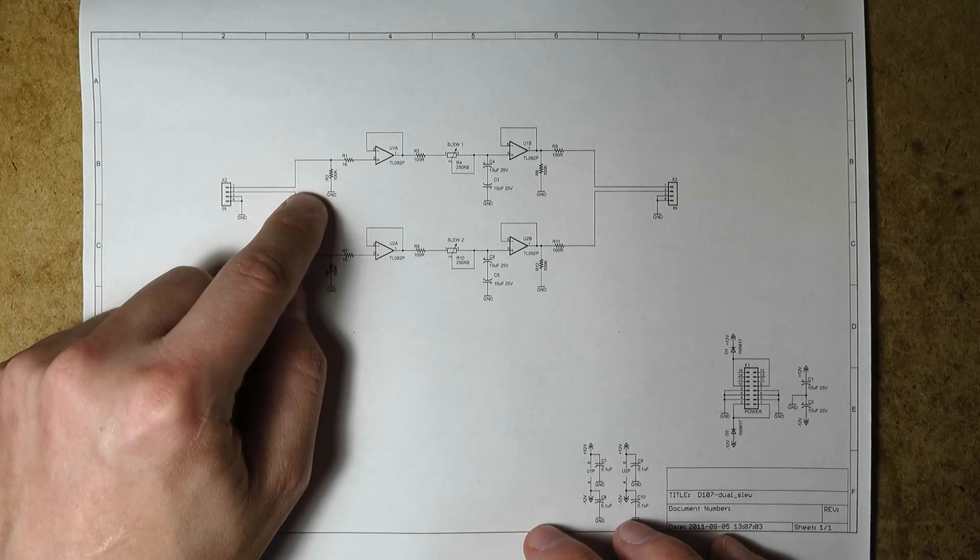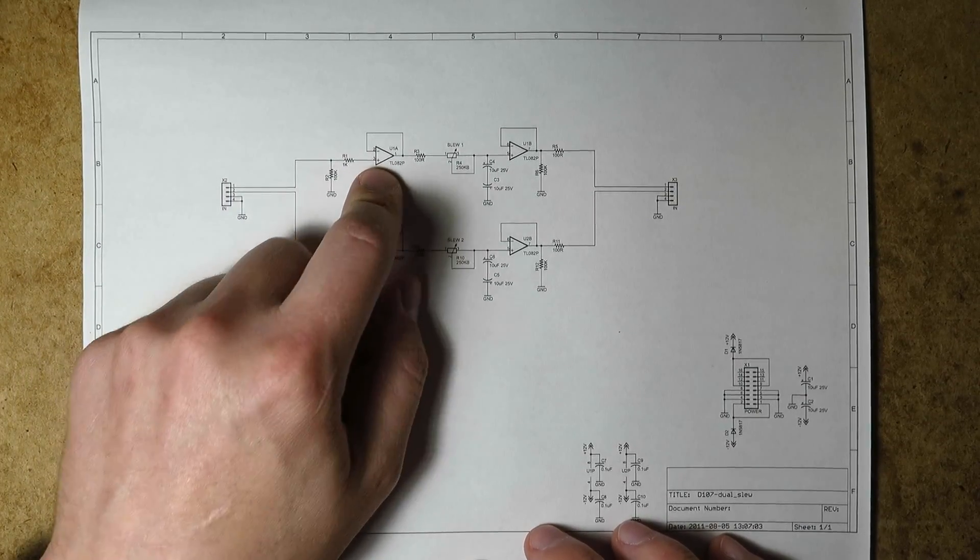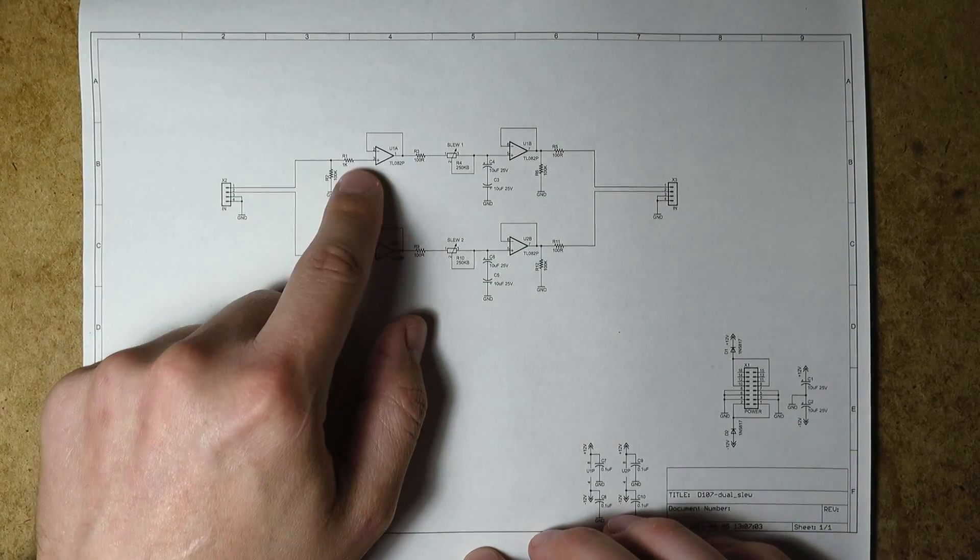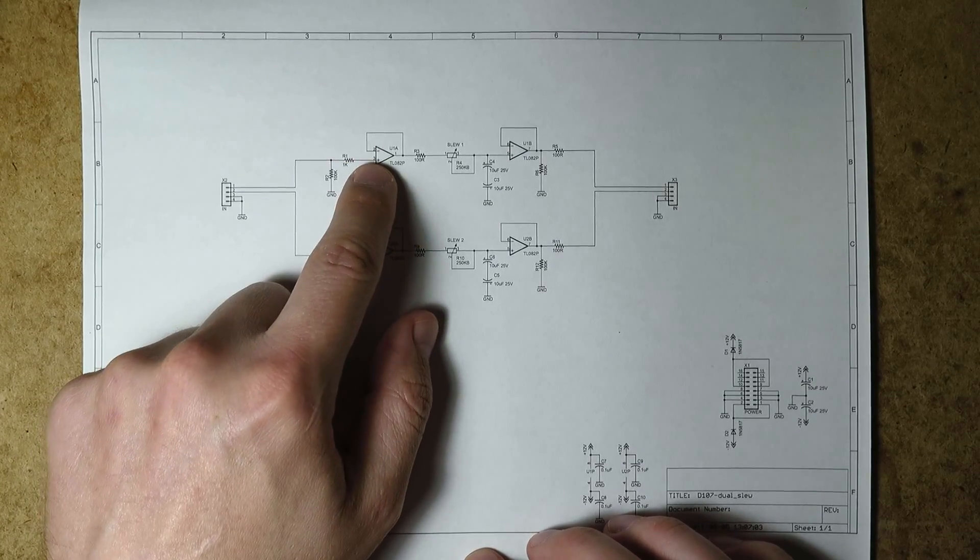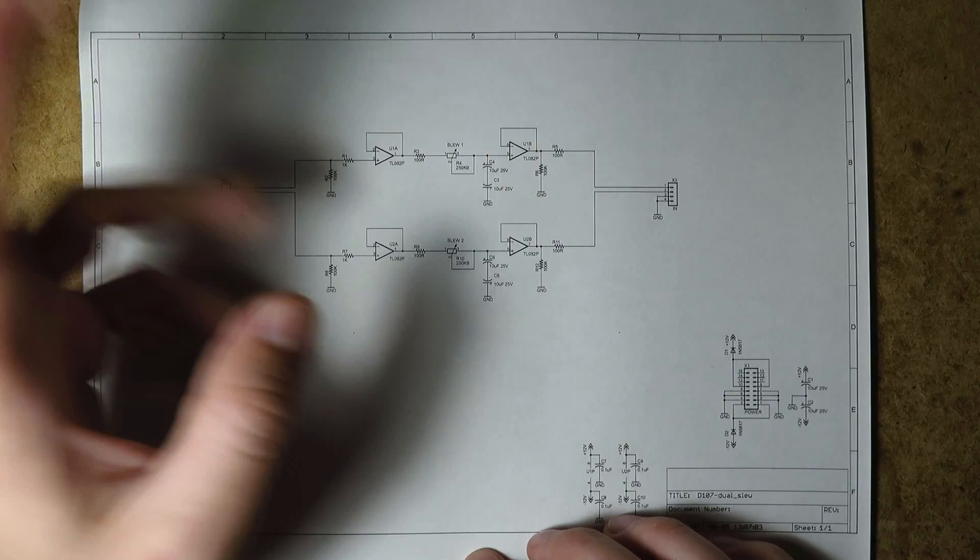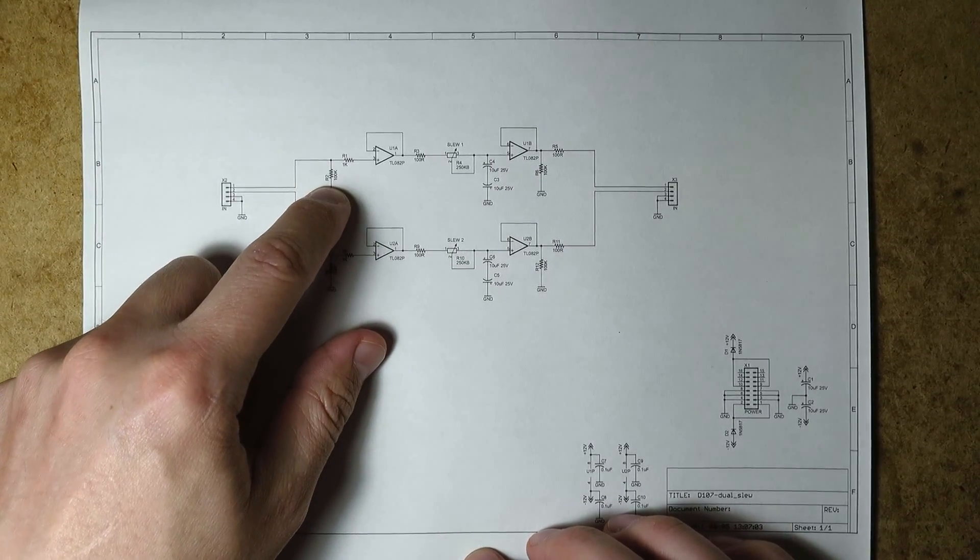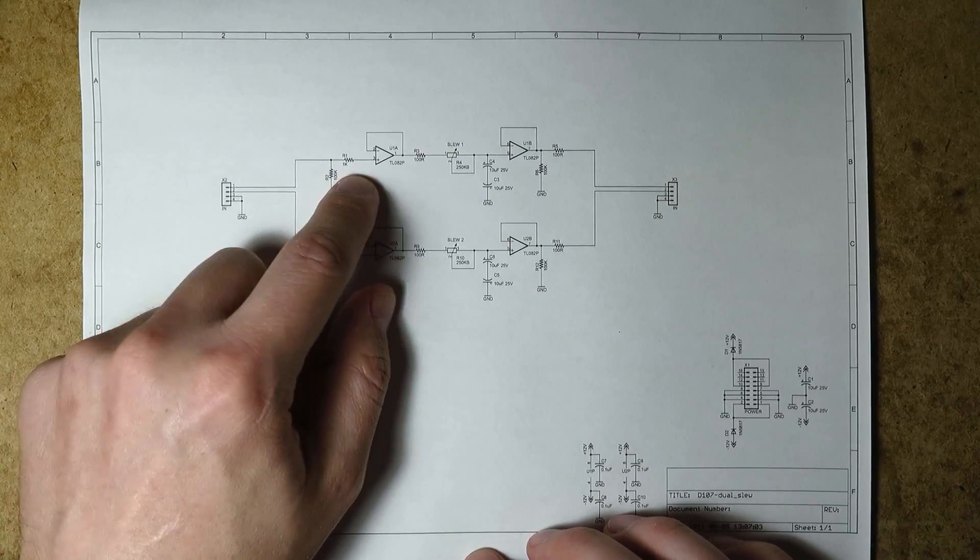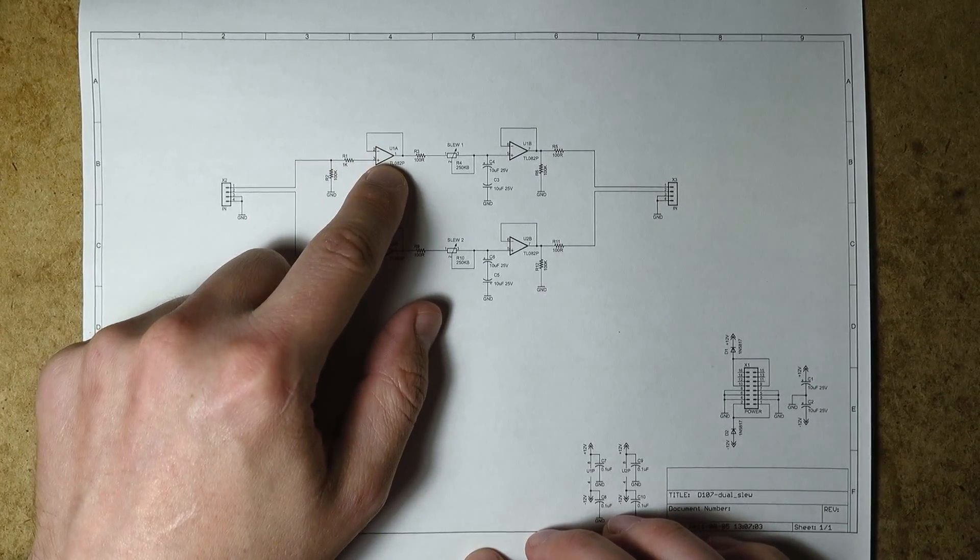A signal comes in here. There's an input termination because this op amp here is running in a unity gain buffer application. You always have to terminate the signal here. If you let this be floating it will go to the rails and make the output not what you want. So this is a little 100k terminator here, it doesn't draw much current. And then it goes through a 1k resistor into the input of this amplifier.